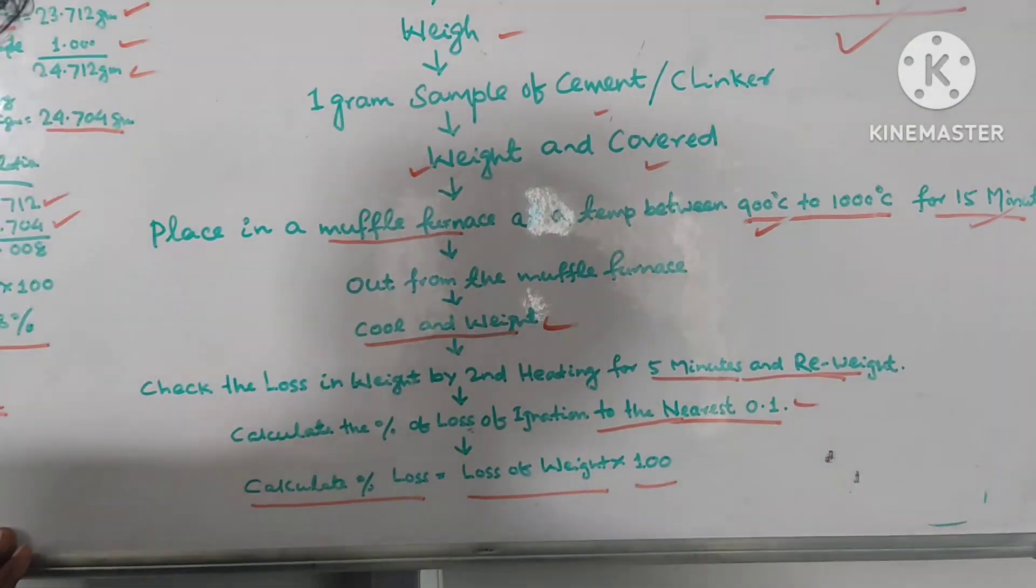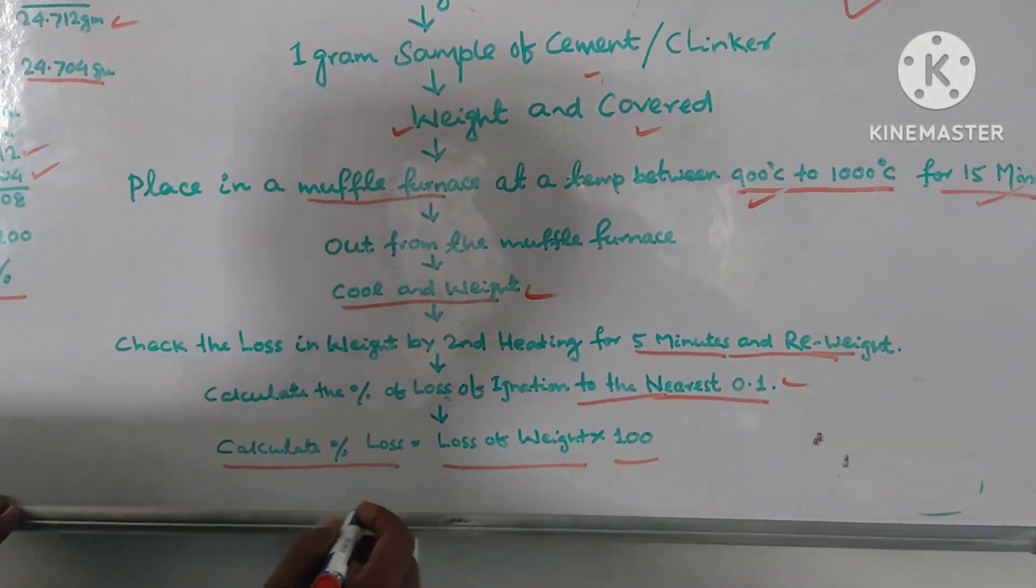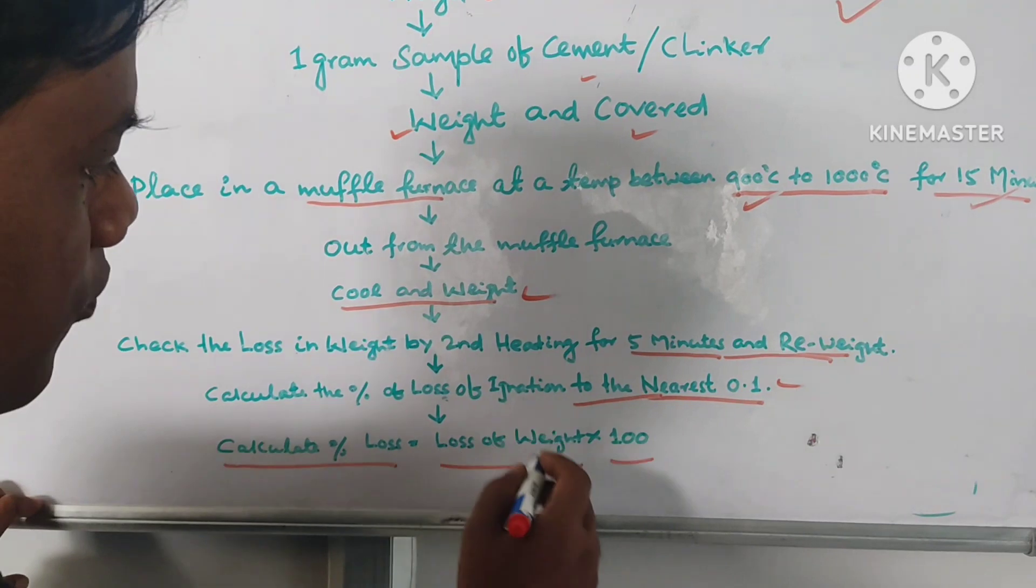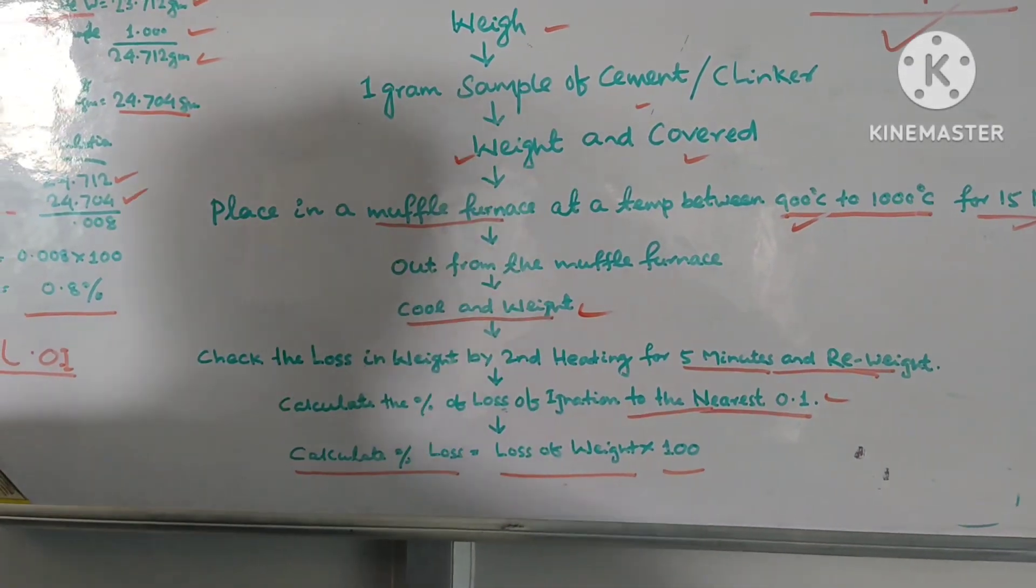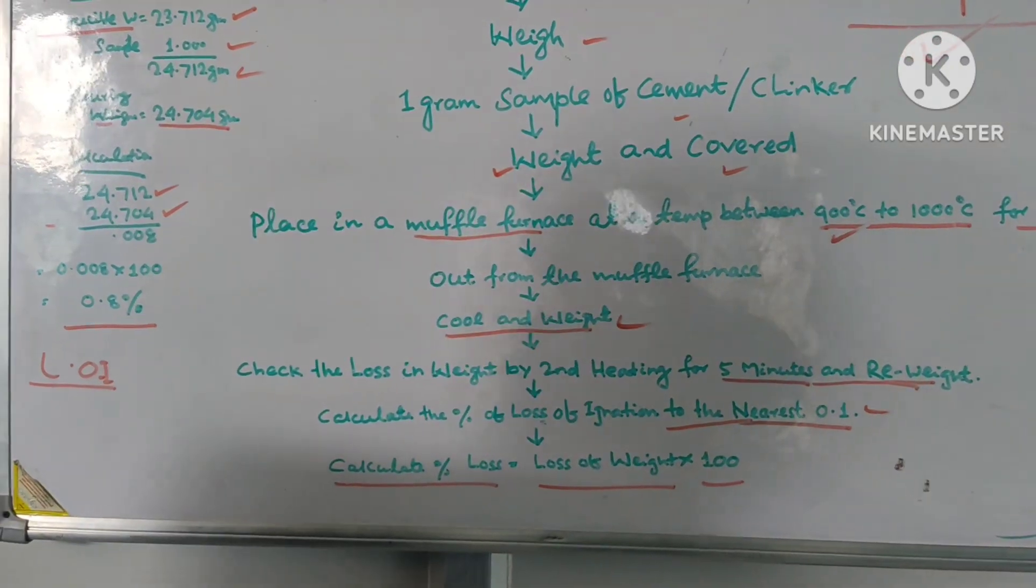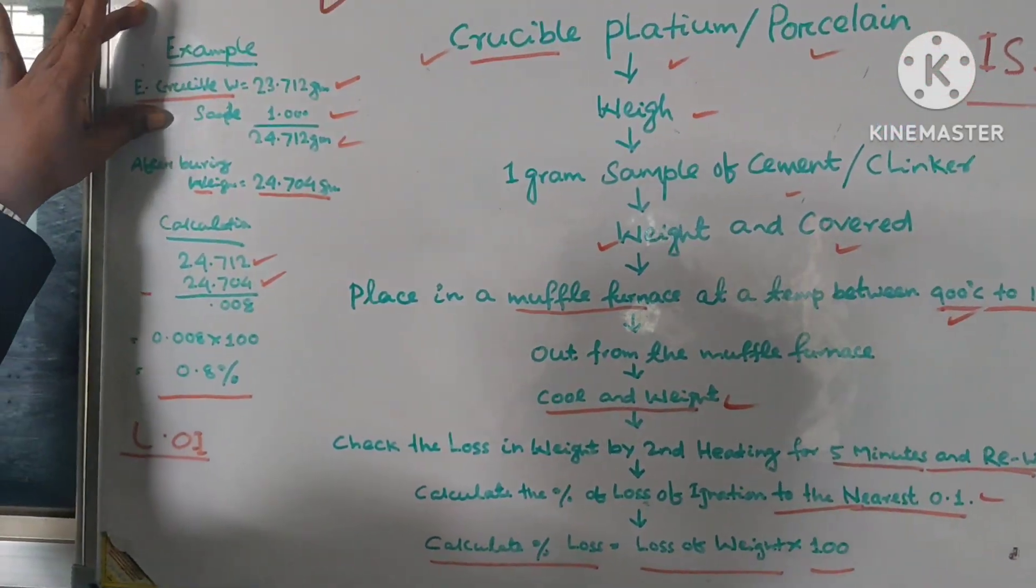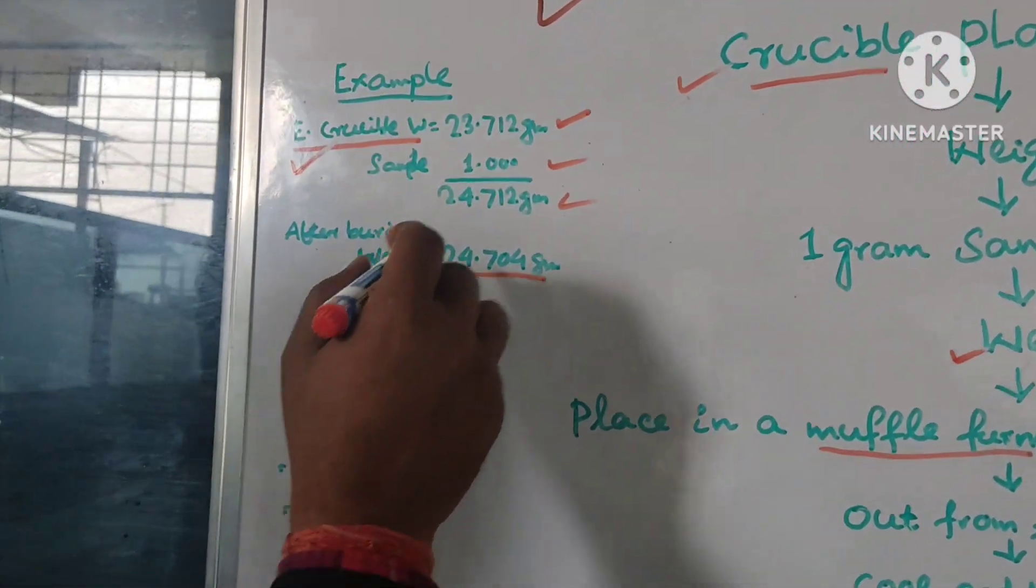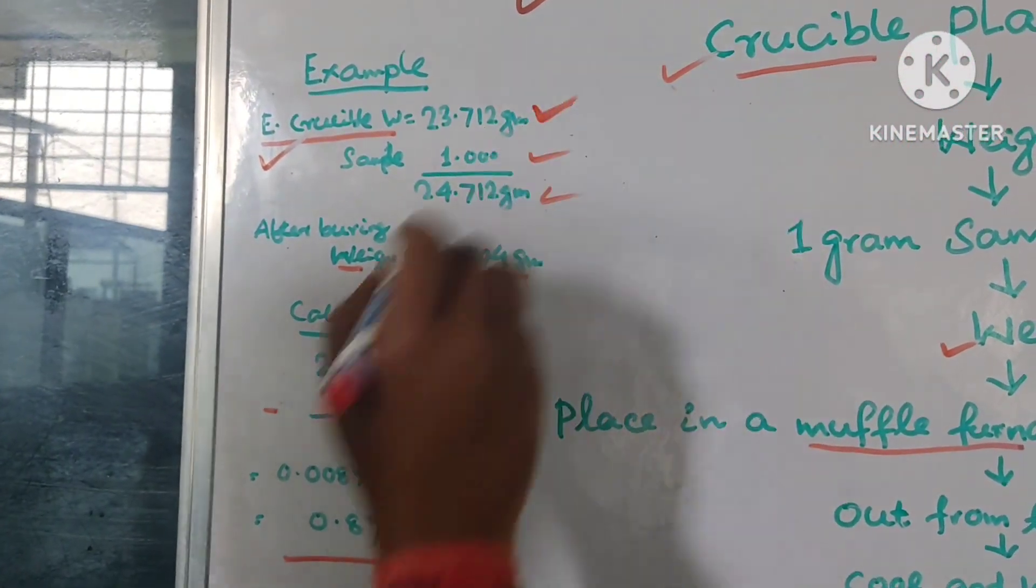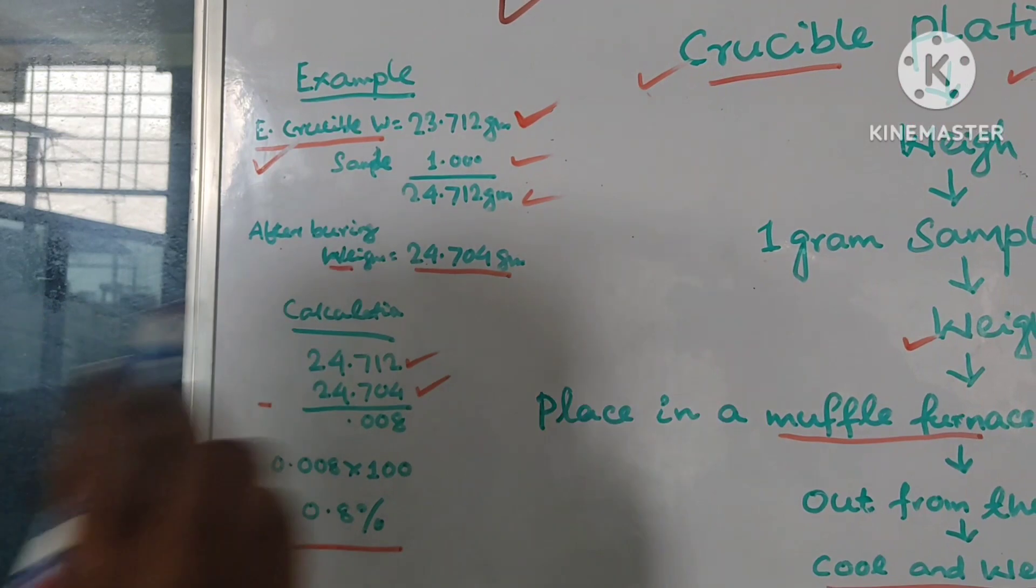And then calculation loss of percent, particular percentage of loss calculation, loss of weight into 100. This is simple method. So I have just taking an example for all of you. Suppose empty crucible weight, 23.712 gram. Empty crucible.